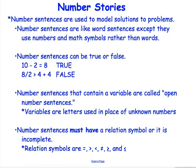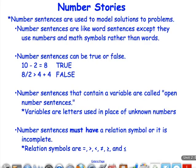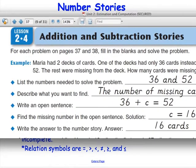Now let's take a look at an example. Here we have an example problem. Maria had two decks of cards. One of the decks had only 36 cards instead of 52. The rest were missing from the deck. How many cards were missing? This is our real life story problem. We're going to sort of dissect these problems so that you can really get a good understanding of what the problem is.